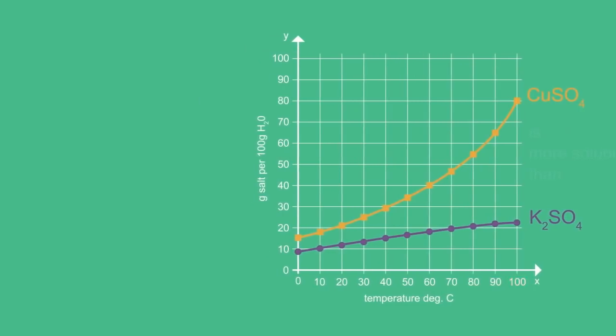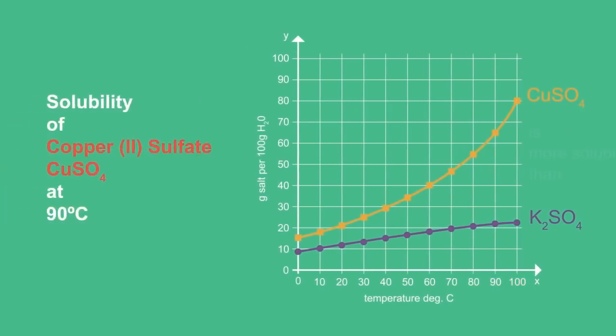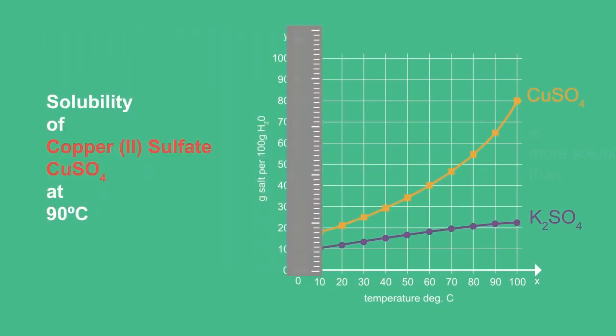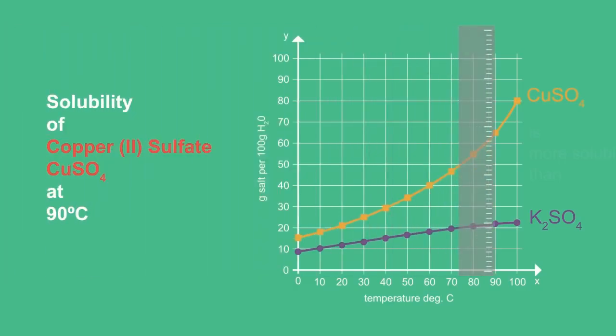Let's say we wanted to find the solubility of CO2 sulfate at 90 degrees Celsius. Take a ruler and draw a vertical line starting at the x-axis at 90 degrees Celsius until it reaches the curve.